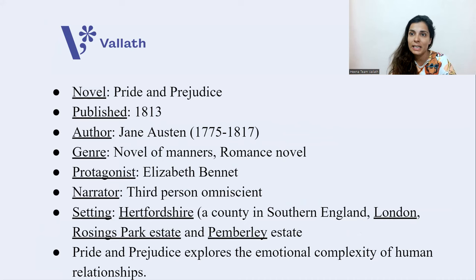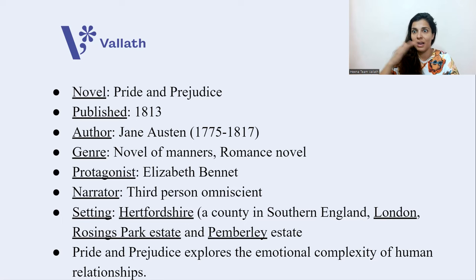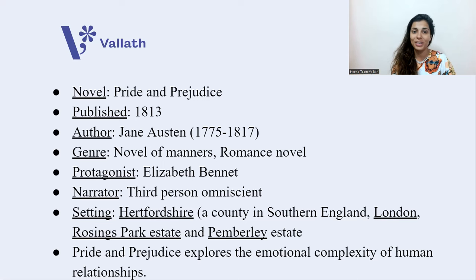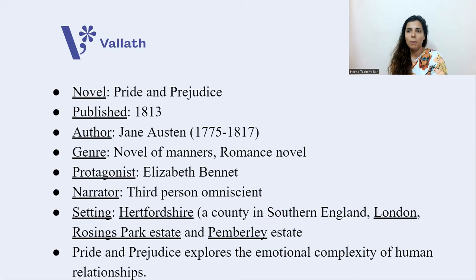Jane Austen lived from 1775 to 1817. The genre of Pride and Prejudice is a novel of manners — and manners here does not mean good or bad manners. Manners means social conventions of that time, like societal rank and hierarchy. Along with that, this is also a romance novel. The protagonist, or the famous heroine in English literature, is Elizabeth Bennett. The narrator of this novel is third-person omniscient — knows everything — and the settings keep on changing.